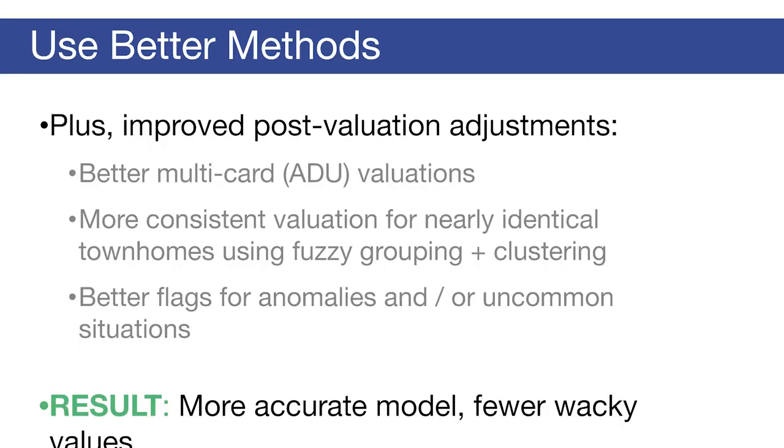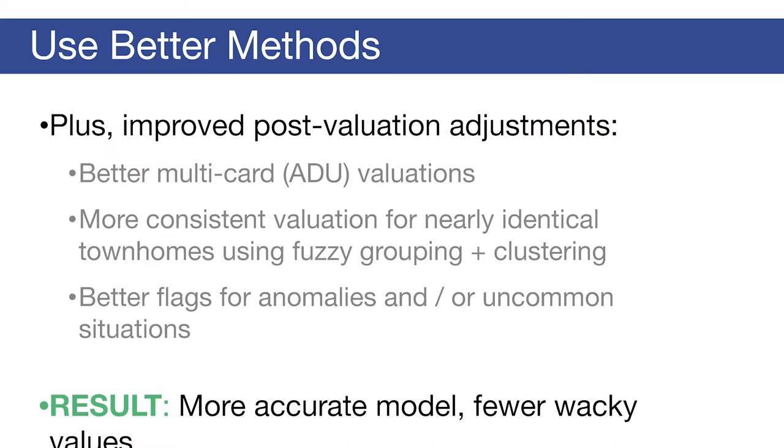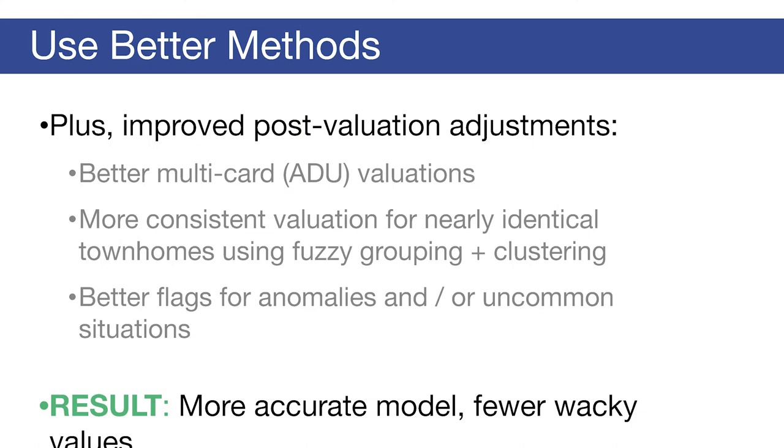In addition to cross validation, we've made some other more minor improvements. For instance, if you have an ADU, those have traditionally been valued in a very weird way — now we have a slightly better method. If you have a townhome in a complex full of identical units, you should get a consistent valuation with your neighbor. And we also just had a bunch more flags for weird anomalous properties that we can go in and hand review. The result of all these methodological improvements is a far more accurate model with fewer very wonky values.